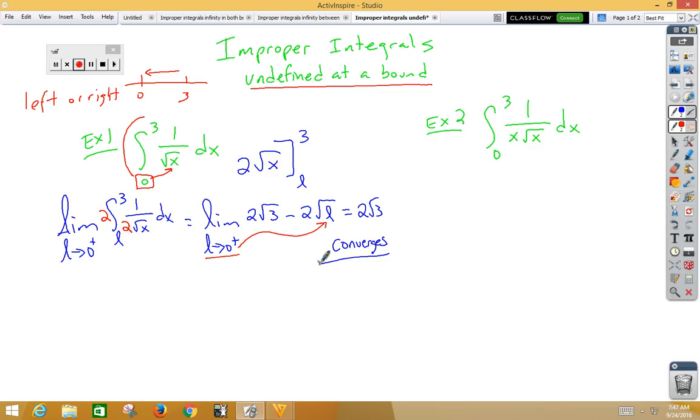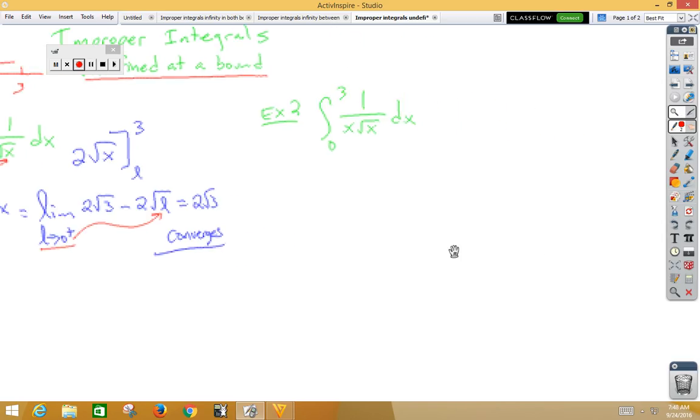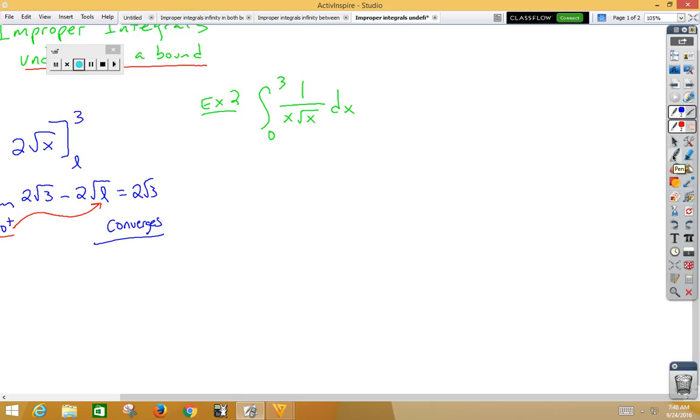Let's take a look at another example. In example 2, again, if we were to plug in the bottom bound into our function, it would be undefined, so we need to temporarily change that into an L. We are approaching 0. Notice our bounds are from 0 to 3, so we are going to be approaching from the right side. And we are integrating from L to 3.